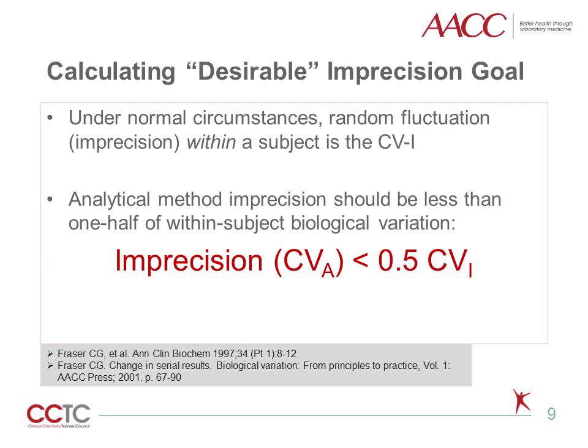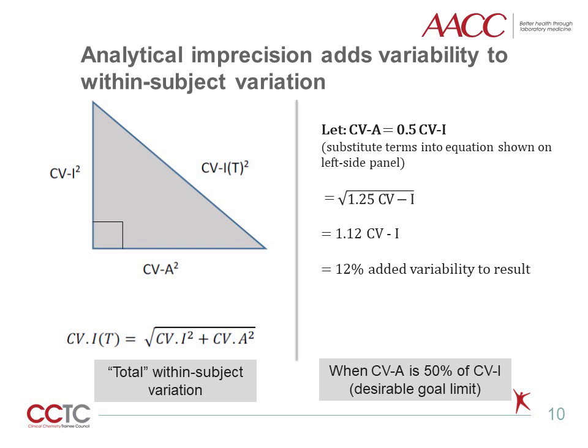The first calculation is setting the desirable imprecision goal, which is based on the CVI estimate for the test biomarker. CVI represents a distribution of repeated test values taken from the same subject, ideally reflecting pure human biology only. In practice, analytical variation CVA of the test method contributes variation to the CVI estimate. Because of this relationship, it has been recommended that the desirable analytical imprecision goal should be less than one-half of within-subject biological variation.